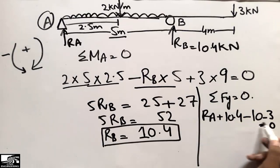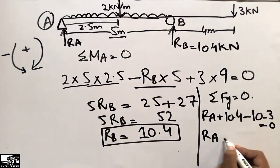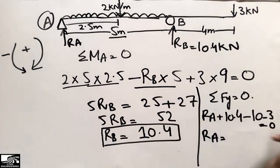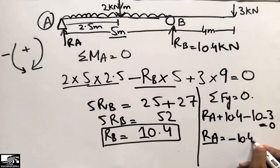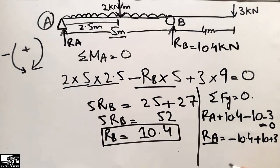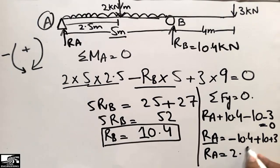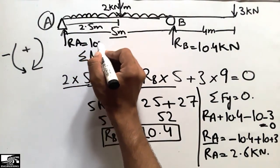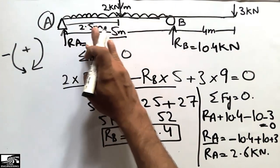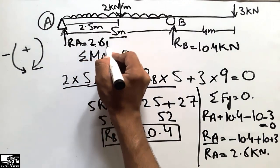Transferring all values: RA plus 10.4 minus 10 minus 3 equals zero, so RA equals minus 10.4 plus 10 plus 3, which gives 2.6 kilonewtons. So the support reaction RA is 2.6 kilonewtons. The two reactions — 10.4 and 2.6 — are able to resist all applied loads.